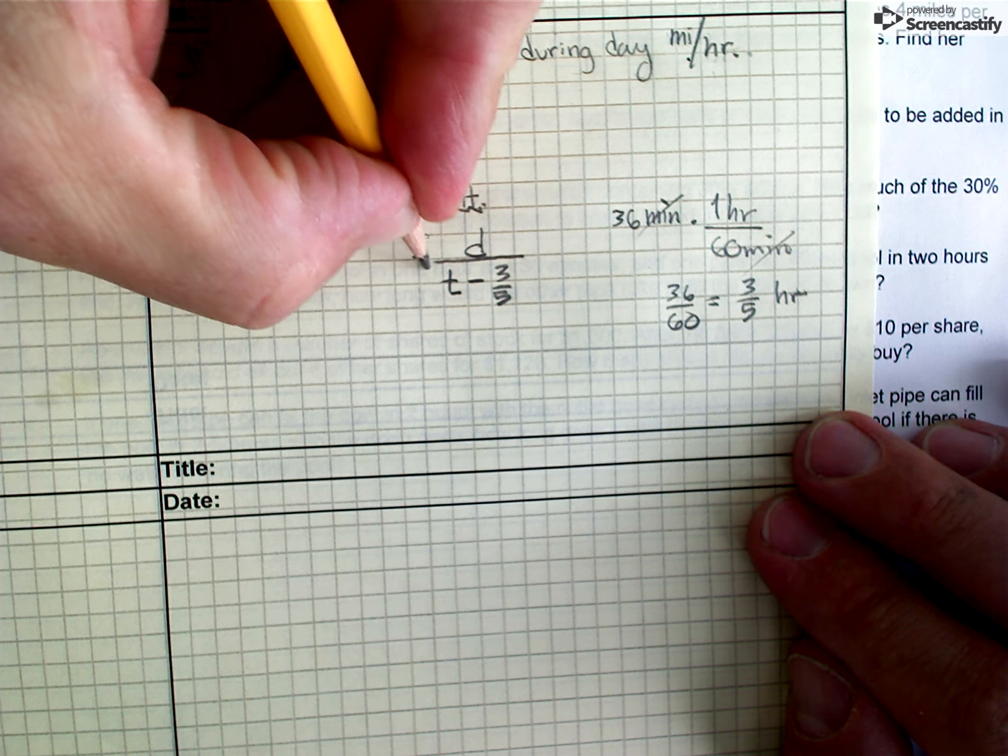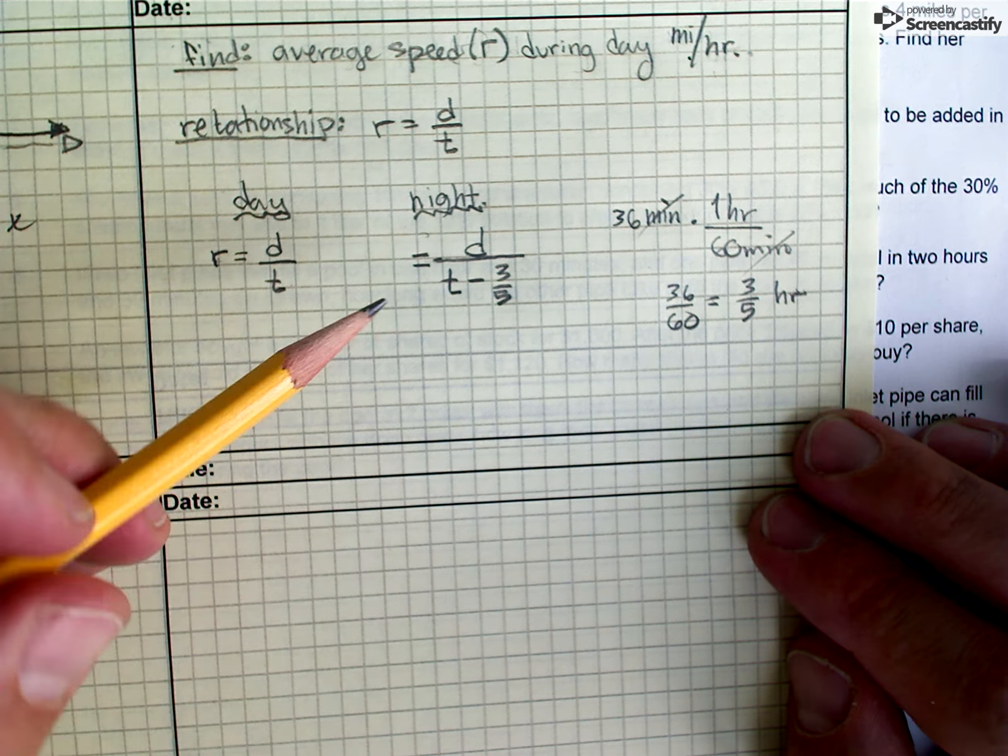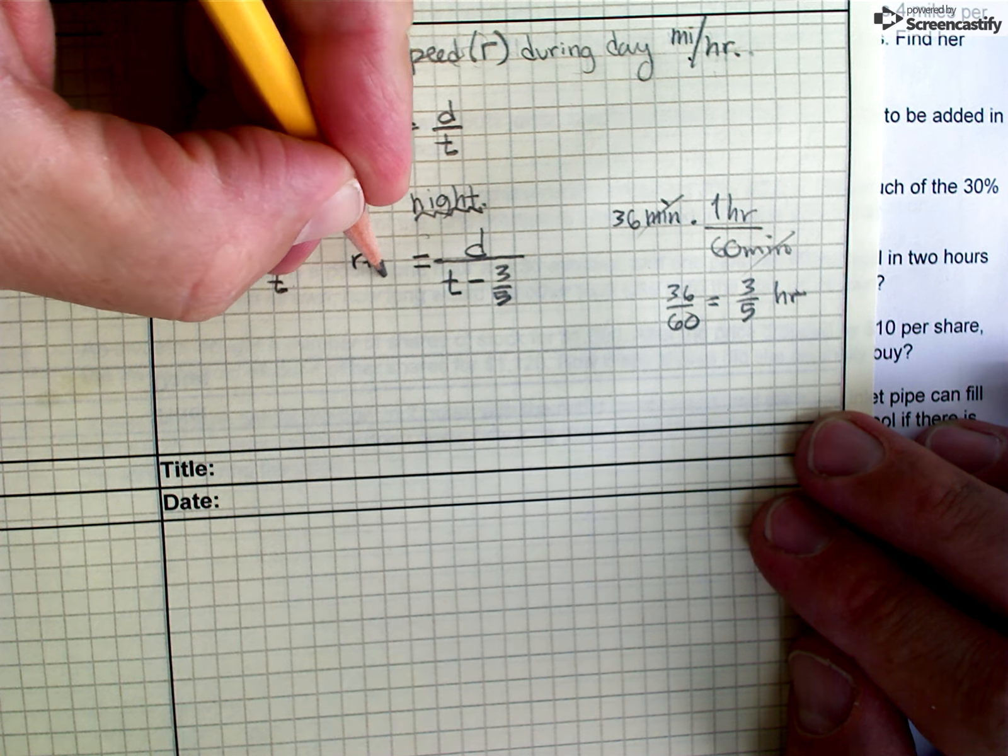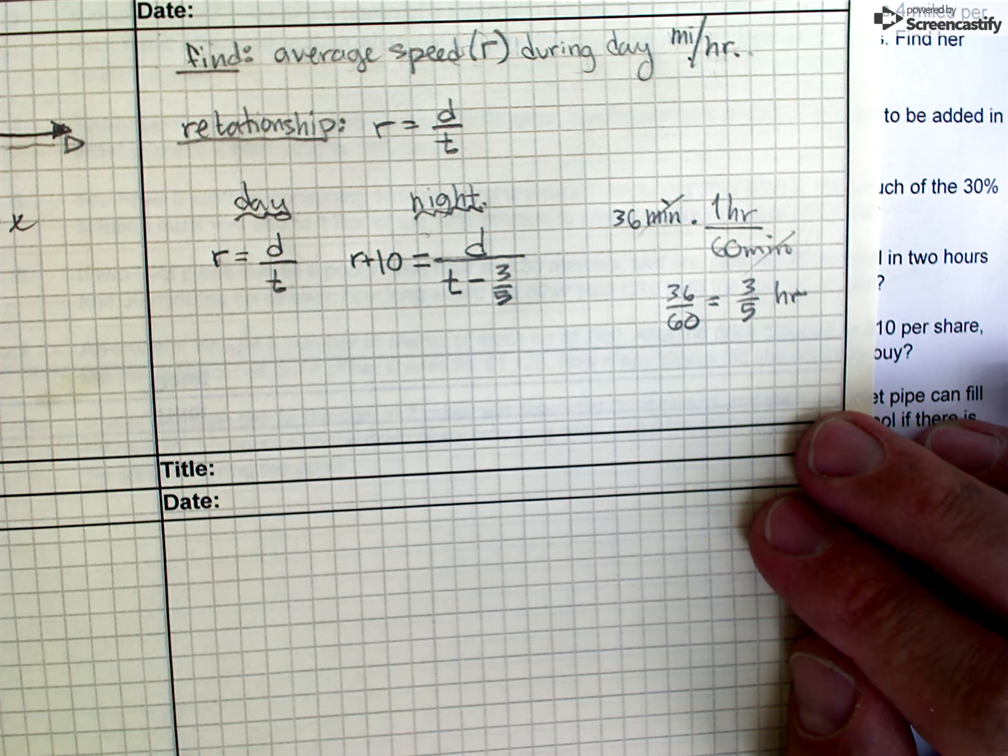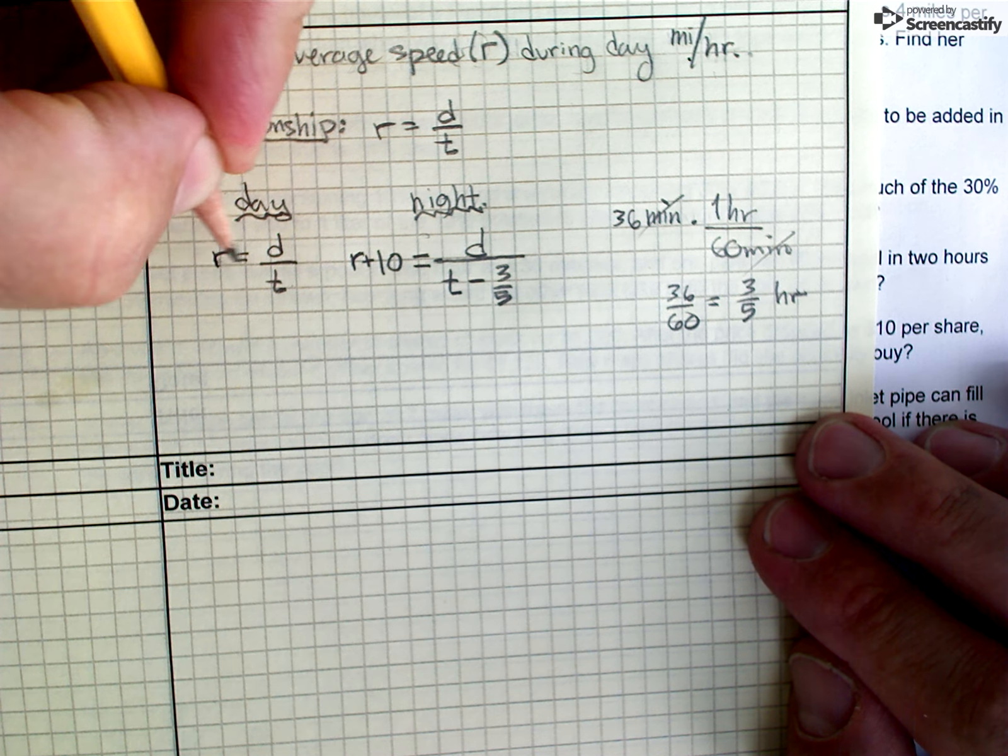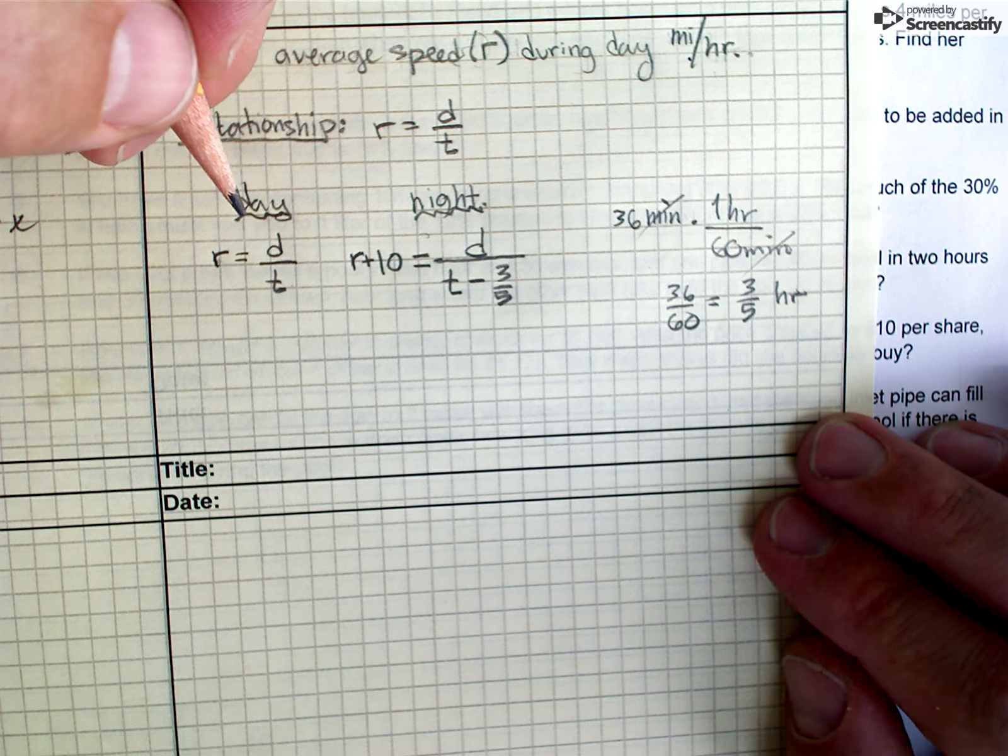The last thing they tell us in this, or the last piece of information we need to use from the problem is that at nighttime, we're going 10 miles per hour faster. So on the left side of this equation, I just put the same as the rate during the day, only 10 miles per hour faster.